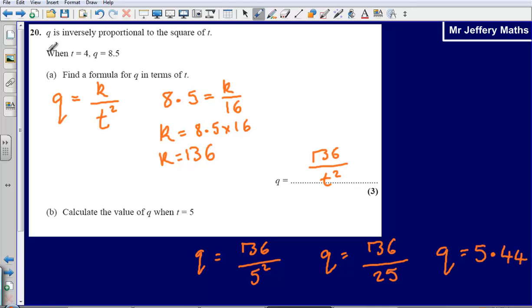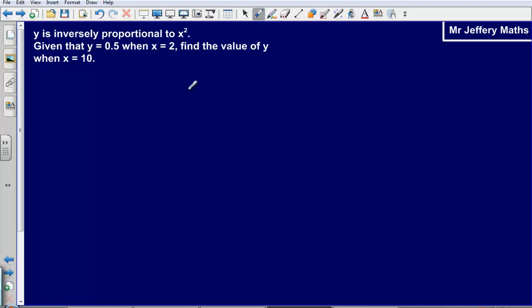Now if you didn't quite get that right, what I suggest you do is pause the video at this point and have a go at this question here. Then press play to see the answers. So y is inversely proportional to x squared, given that y equals 0.5 when x equals 2, find the value of y when x equals 10.